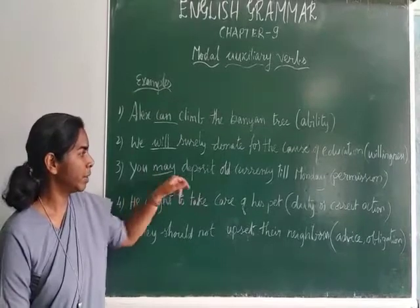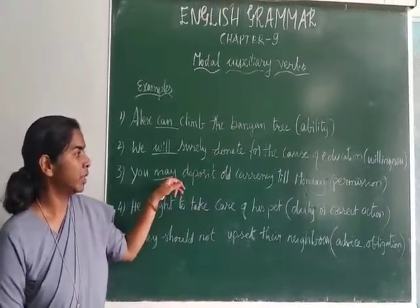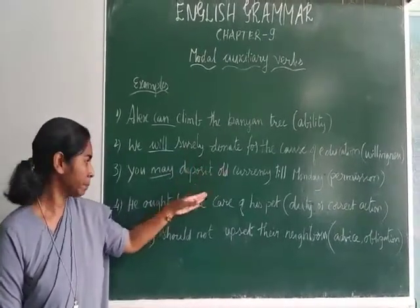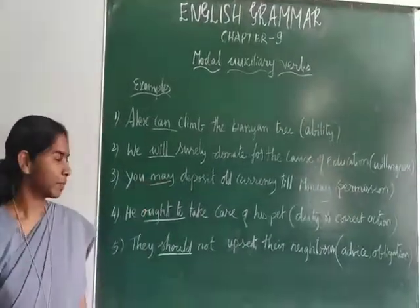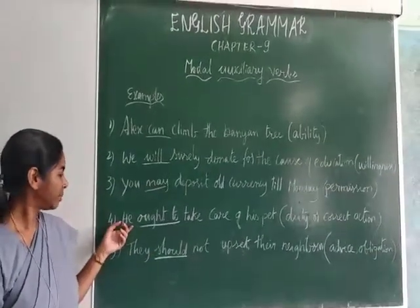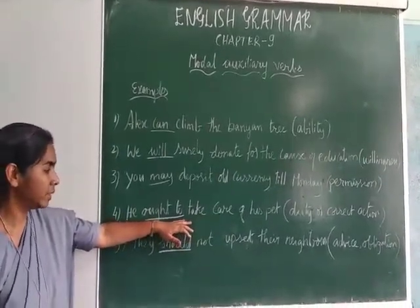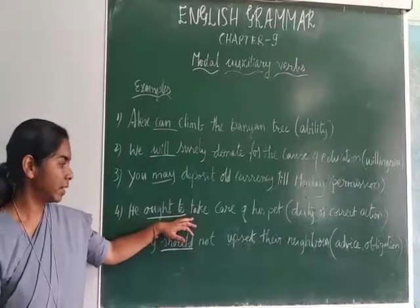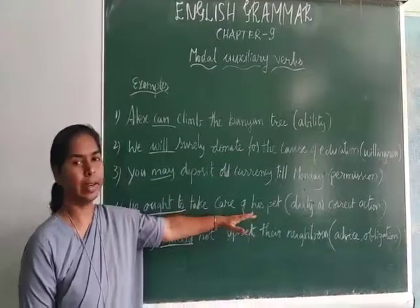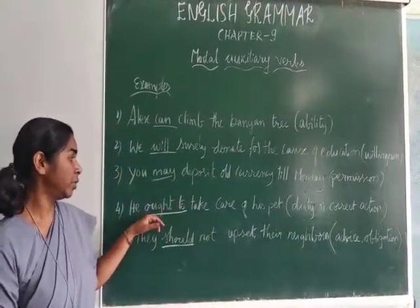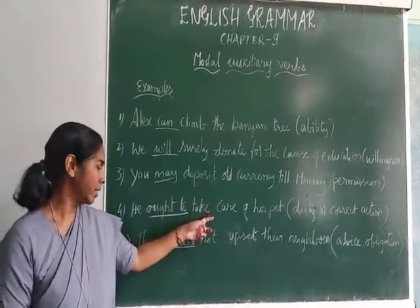Third example: 'You may deposit old currency till Monday' — this is a permission given to deposit old currency till Monday, so may here expresses permission. Fourth example: 'He ought to take care of his pet' — ought to is used for what is right and correct. His duty is to take care of his pet, meaning it is the right course of action for him.